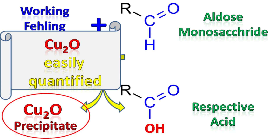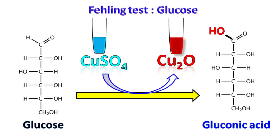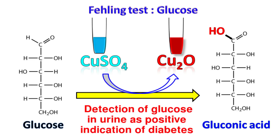The copper oxide formed is reddish or brown in color and can be quantified easily to find the amount of aldose monosaccharide present. This is a very common test used to detect the presence of glucose in urine as a positive indication of diabetes.